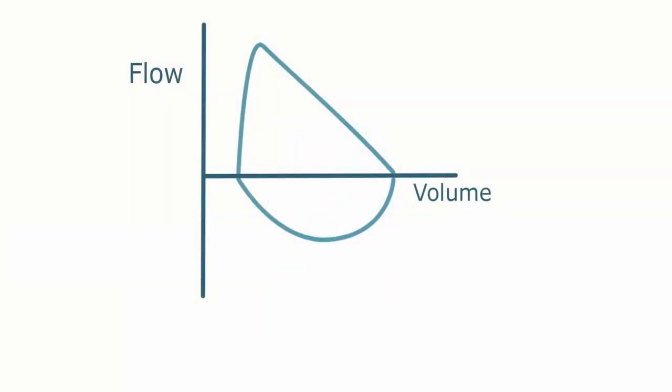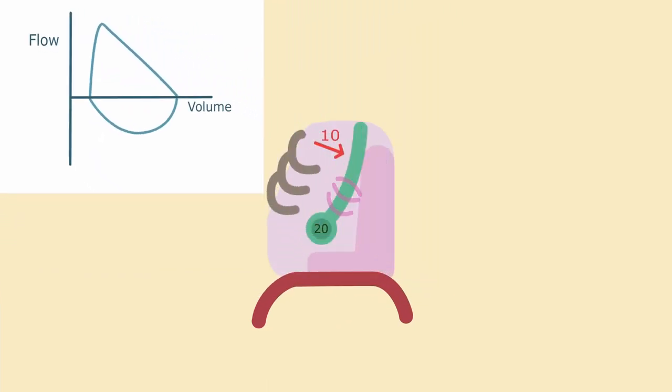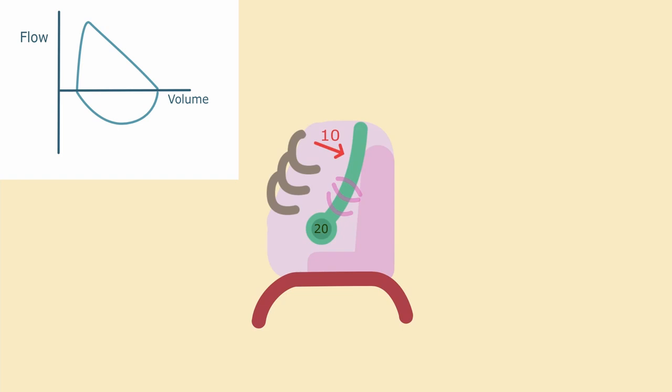The normal spirometry curve looks like this, with flow on the y-axis and volume on the x-axis, and that would be volume that has been pushed out of the lungs.